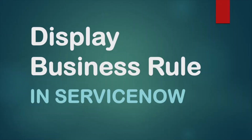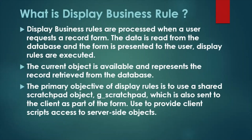Welcome back to the YouTube channel. We will try to understand Display Business Rule in ServiceNow. Display business rules are processed when a user requests a record form — the data is read from the database and the form is presented to the user. Display business rules get executed once data is read from the database and the form is being presented to the user. The current object is available and represents the record retrieved from the database.